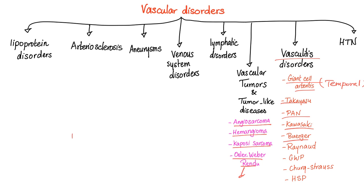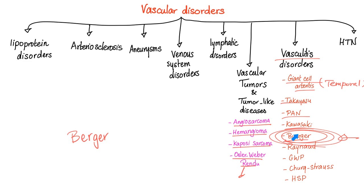By the way, in medicine we have two Buergers. The first one is B-U-E like this one, and the next one is B-E-R, Berger's. These are not the same. The B-U-E one is thromboangiitis obliterans, related to smoking. The B-E-R one is IgA nephropathy.